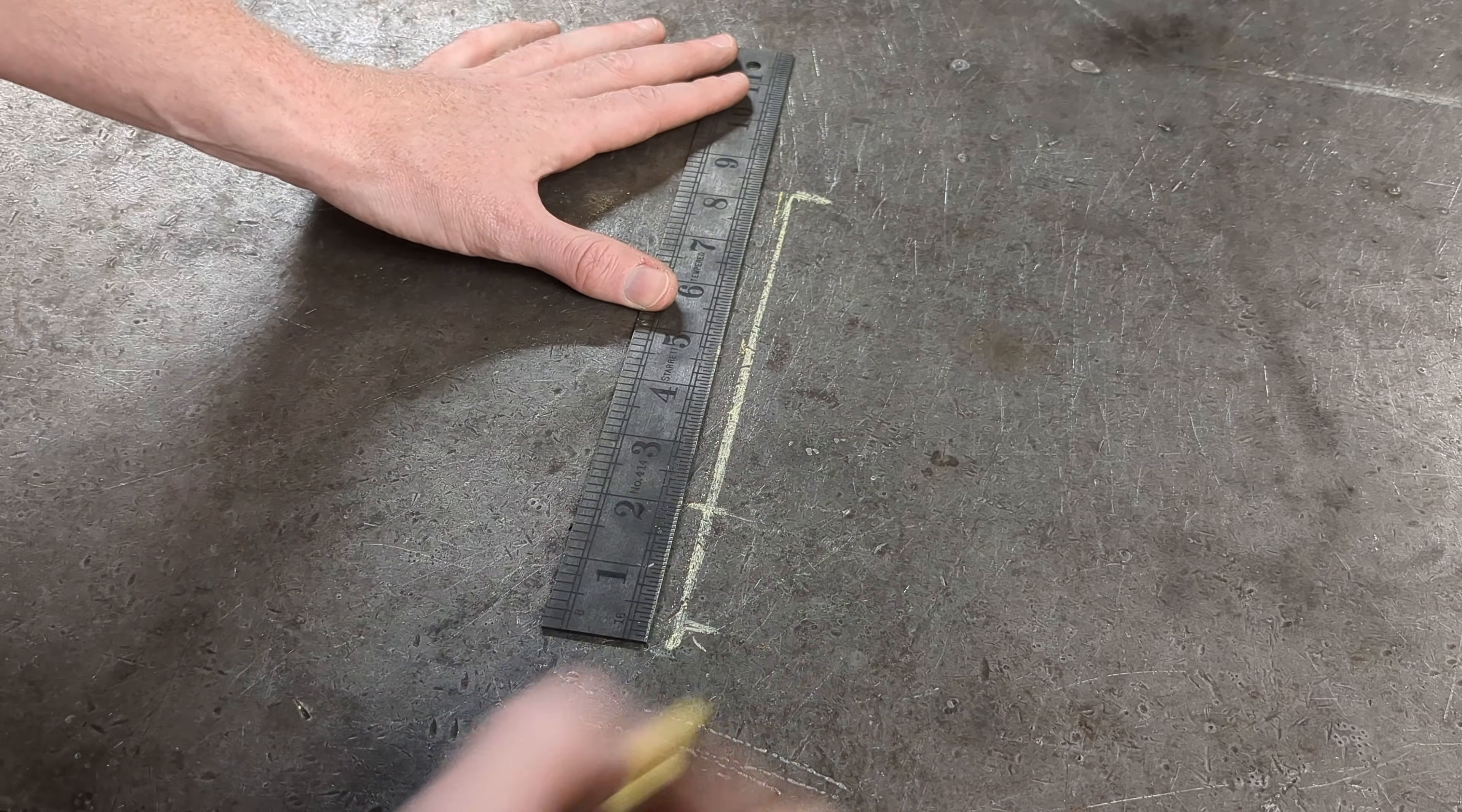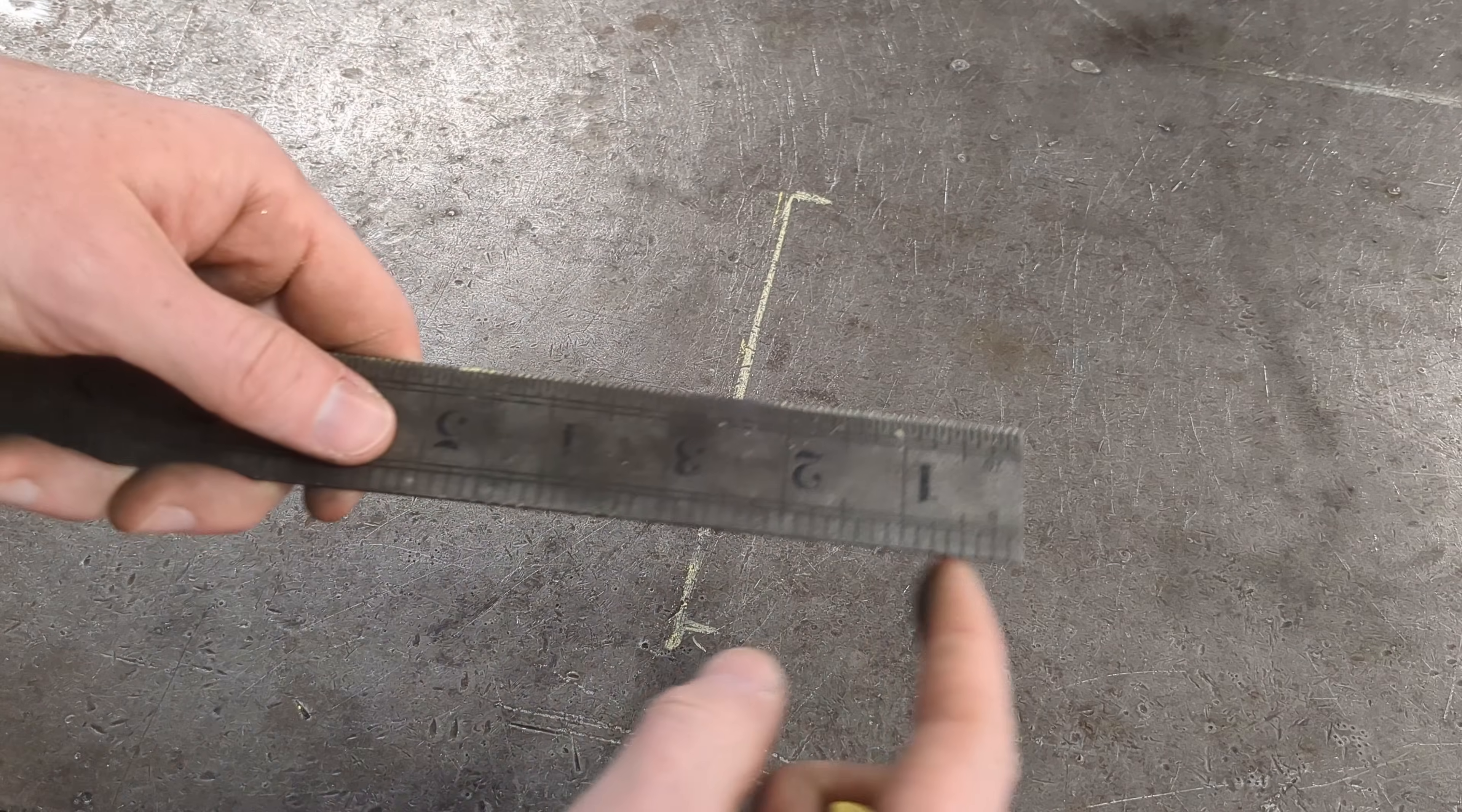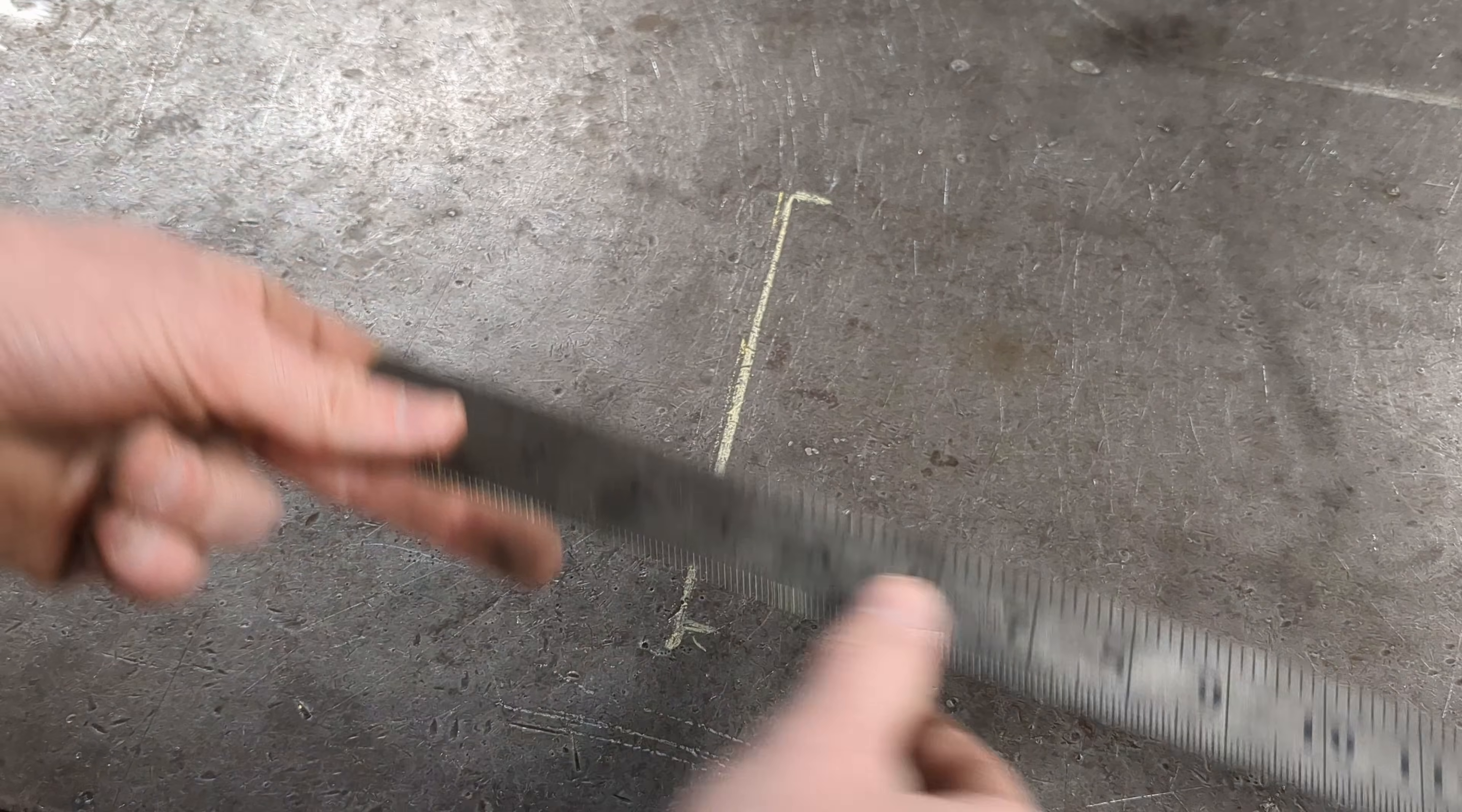The width of the template can be about half or a little more of the distance of your original line. For this example, I chose 5 inches. Center that measurement where your two lines cross and mark it.